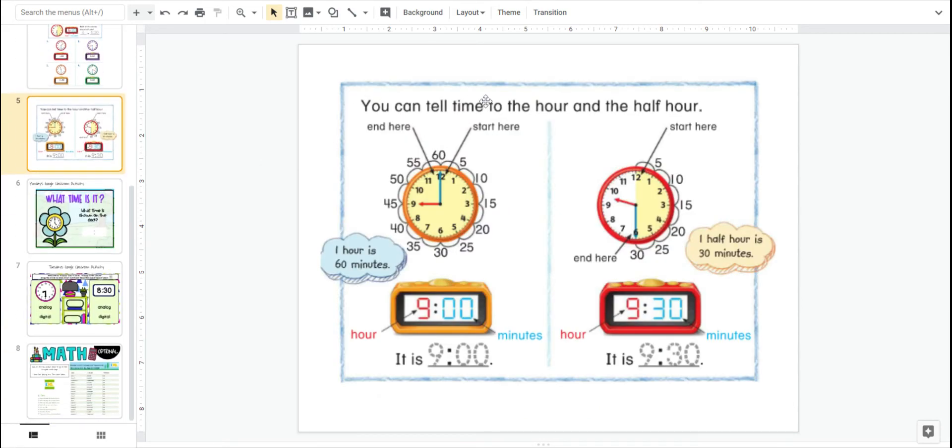It says you can tell time to the hour and half hour. So here's our hour that we worked so hard on last week and you guys did a nice job with. The minute hand is straight up touching the 12. We know that means zero, zero, o'clock. And the hour hand points right to the number. That's the hour. So this is nine o'clock. Here it is on a digital clock. Nine o'clock.